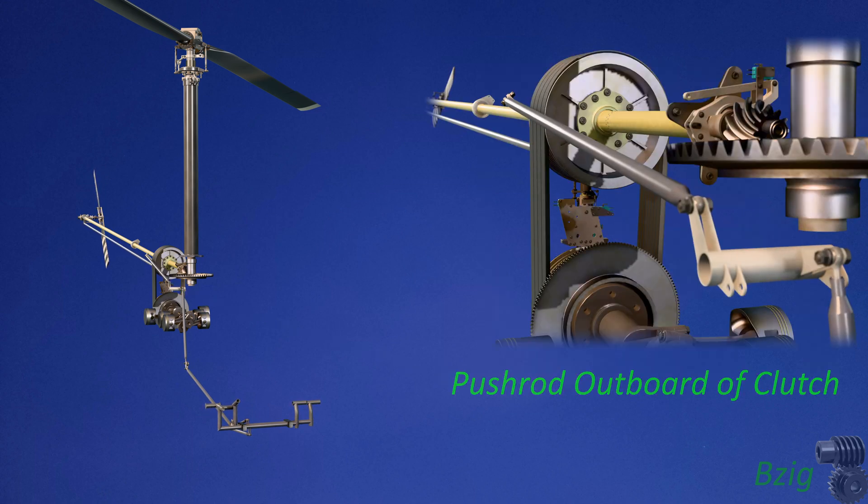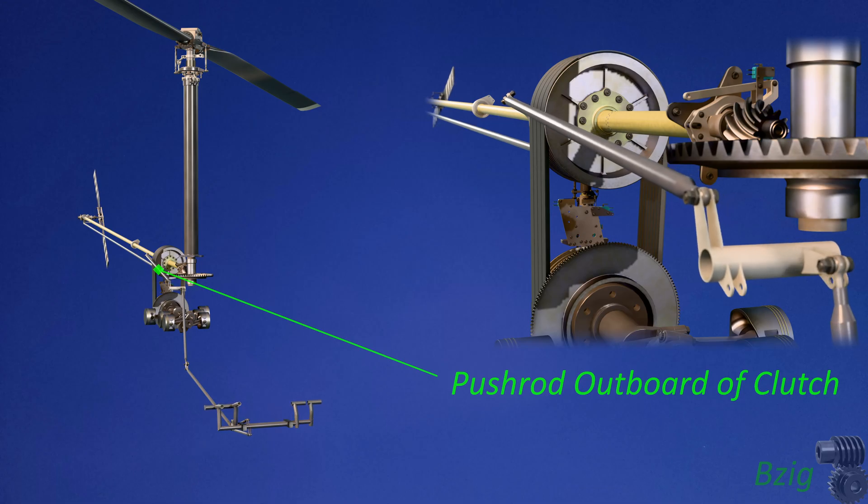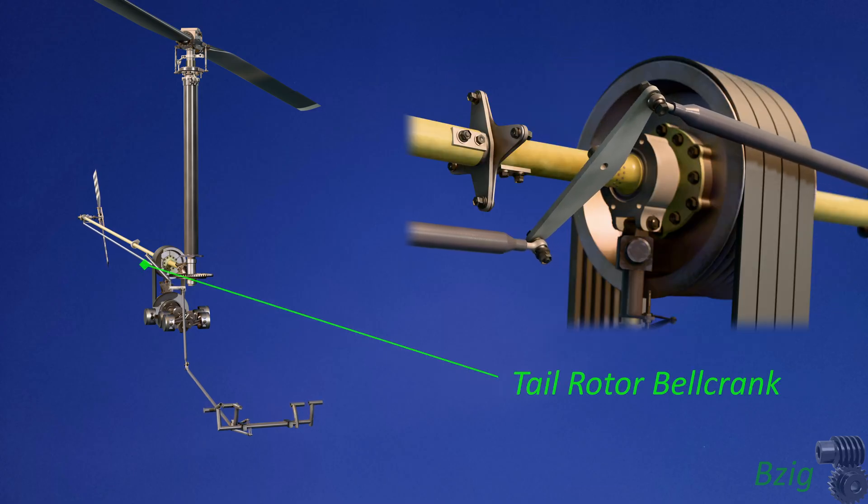Aside from the direction change, the intermediate bell crank also moves tail rotor control outward laterally so that it can physically bypass the clutch assembly. From there this control motion is passed to a bell crank located just behind the clutch assembly.